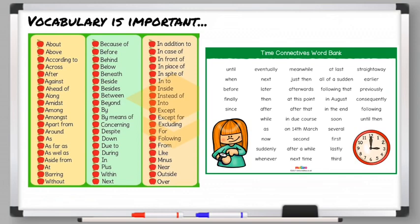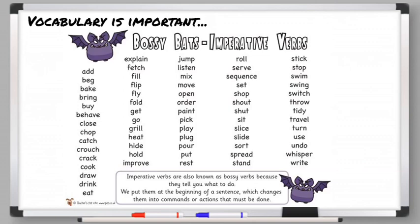Think carefully about the kinds of vocabulary you are going to use in this text. The action vocabulary — imperative verbs, also known as bossy words — are the words that tell the person what to do. So: add this, fold this, get this, shut this, cut that. All of those words tell the person what action they're going to do, and they are called bossy words because they sound quite bossy.